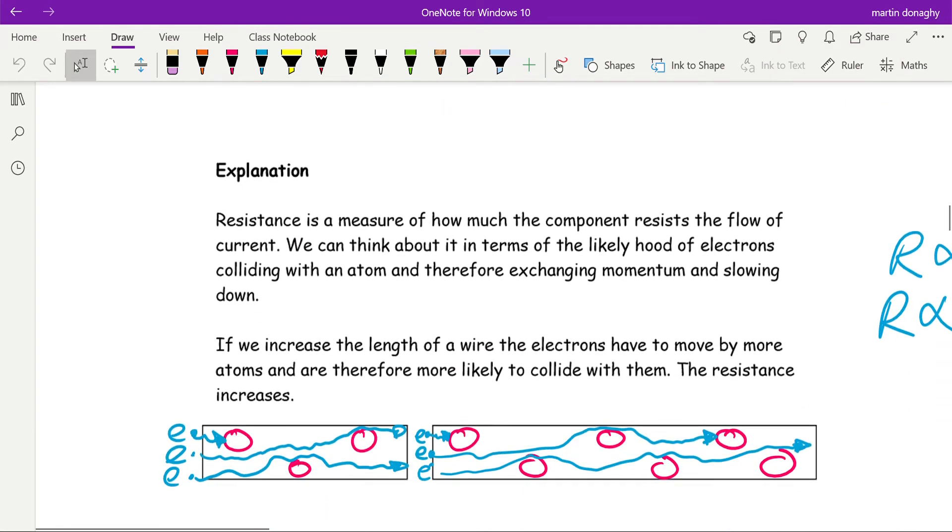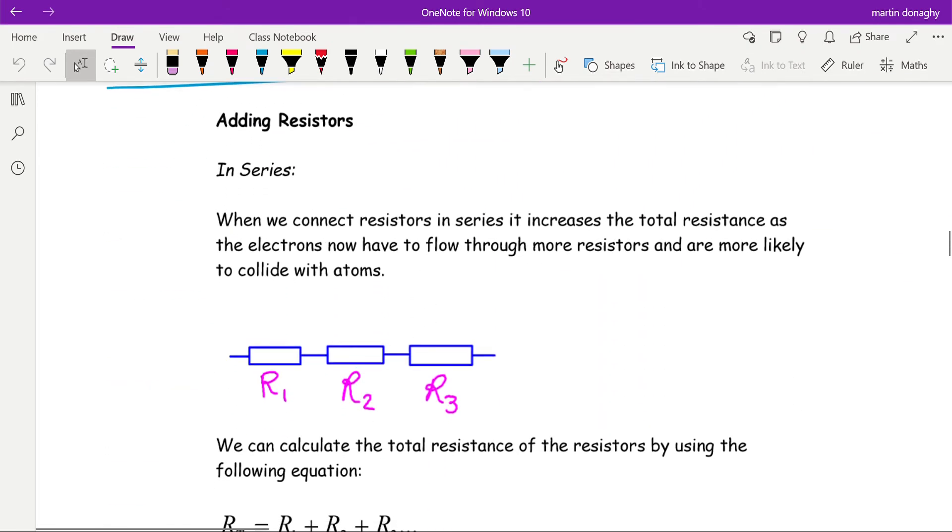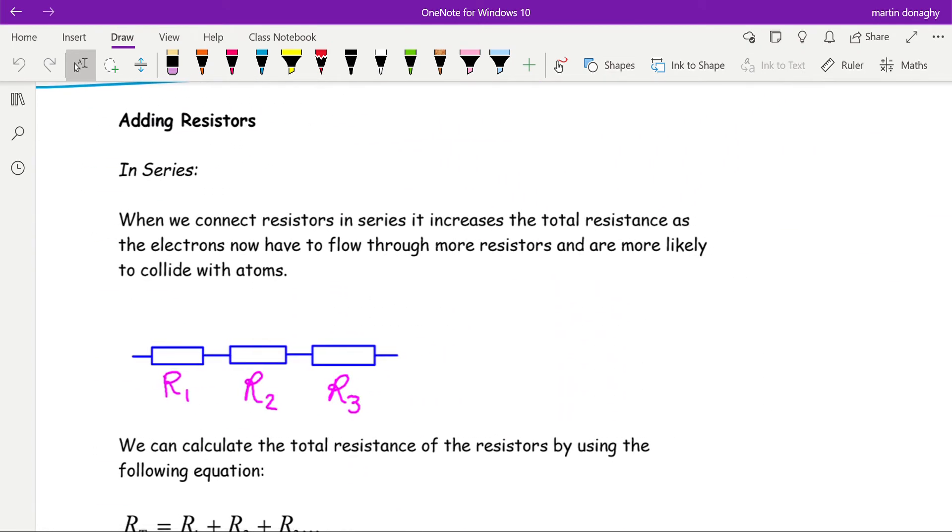Okay, so the next thing we have to look at is adding resistors. Most devices that you have will have hundreds if not thousands of resistors in them, and we can simplify problems in electronics to make them easier to solve if we combine together resistors into a single resistance. We just find the total resistance of all the resistors.